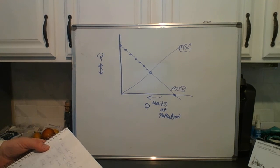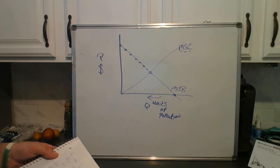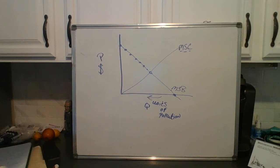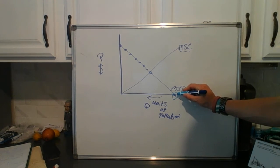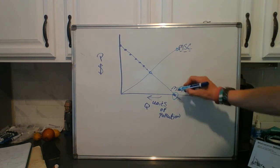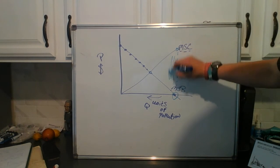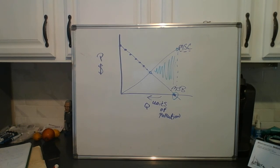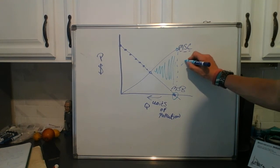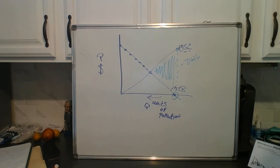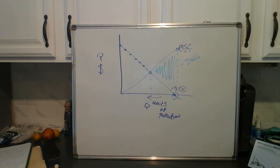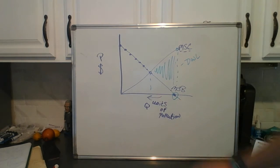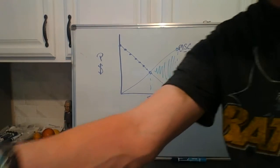So that's where society wants to be — where MSC and MSB intersect. But with no government regulation, the firm is going to go all the way to where their marginal social benefit is zero. Their marginal social cost is effectively zero to them, and MSB is way up there — that's a big gap from where society wants to be. So we've got deadweight loss; it's inefficient, and we should try to regulate to get pollution down to that optimal intersection point.